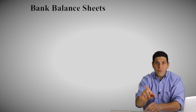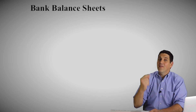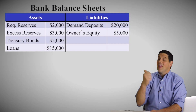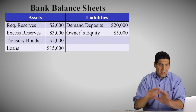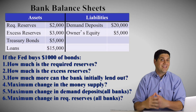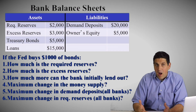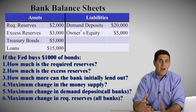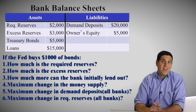Now here's a new scenario — same bank balance sheet from the very beginning. We've got the same liabilities and assets, same numbers as before, except now let's say the Fed buys $1,000 of bonds. So the Fed comes in, does open market operations, buys $1,000 of bonds. Please answer questions one through six. Pause the video. Good luck.